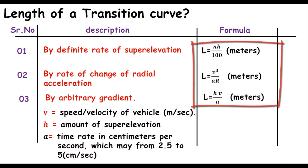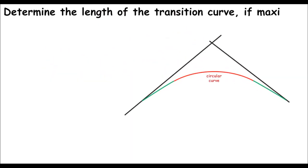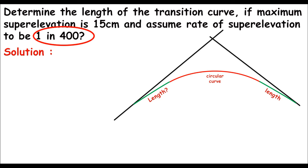Using these three formulas we can easily determine the length of the transition curve. For better understanding, let's do an example. In this example, we are asked to determine the length of the transition curve if the maximum super elevation is 15 centimeters, and we assume the rate of super elevation to be 1 in 400. The data is just enough to determine the length of the transition curve, so let's go directly to the solution.